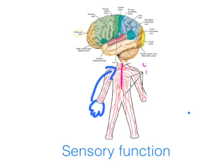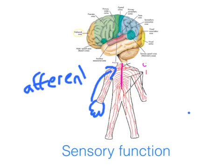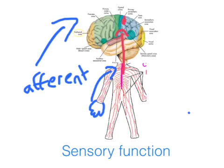My spinal cord acts as a conduit. It will relay this information via a series of afferent tracks — and when we talk about afferent, it basically means conveying sensory information towards the brain. So my spinal cord will convey the afferent information to my somatosensory cortex, which will process how hot the bath is.